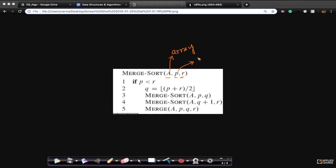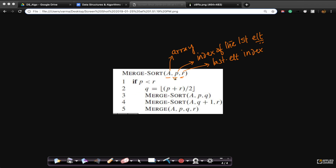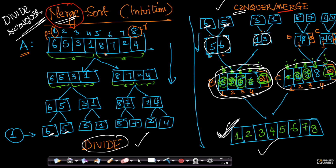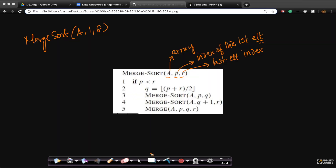P is basically the index of the first element that you want to sort, and R is the last element index. So what would I pass initially? Initially I would call merge sort A, 1, 8 for this example. I'll try to connect the code to this example. So I'll pass A, 1, 8 — that's what I would pass.